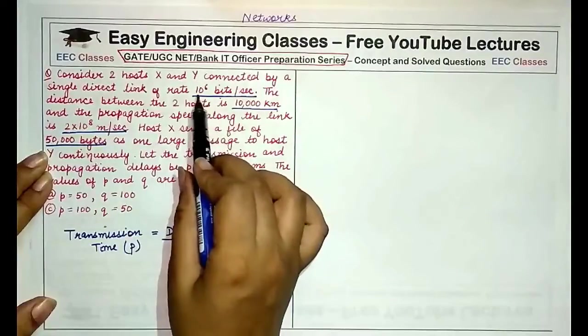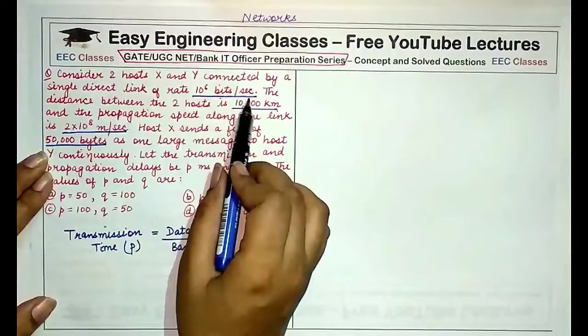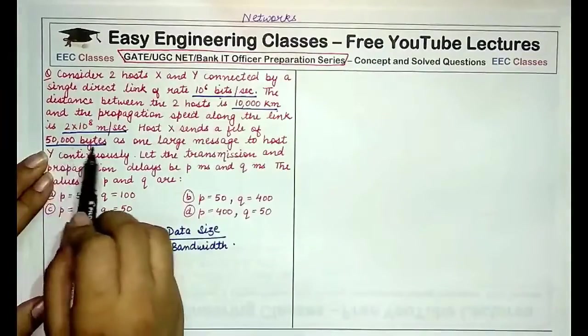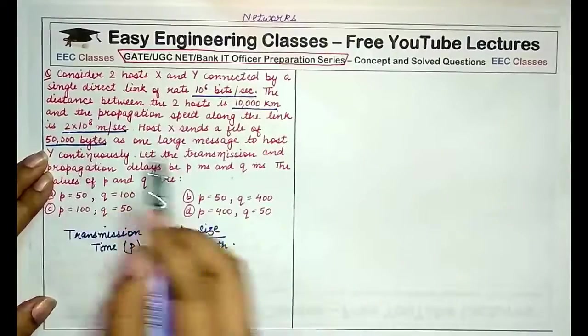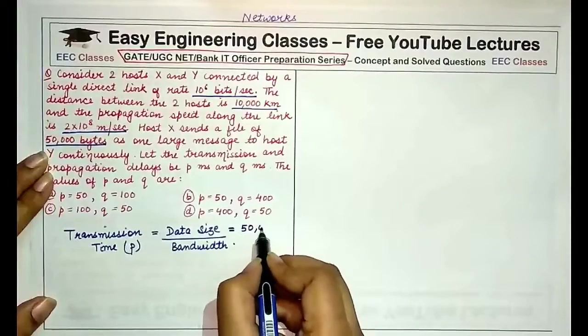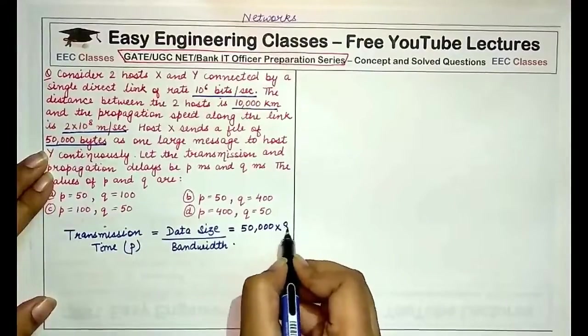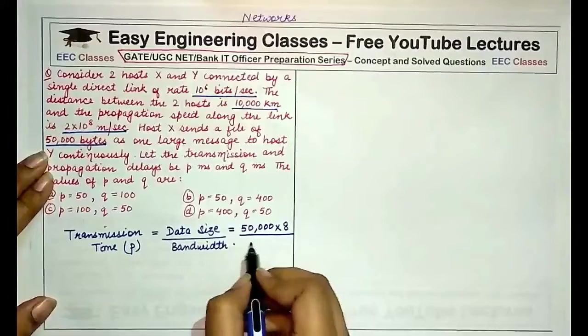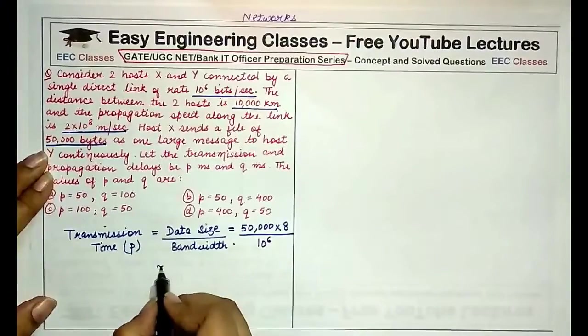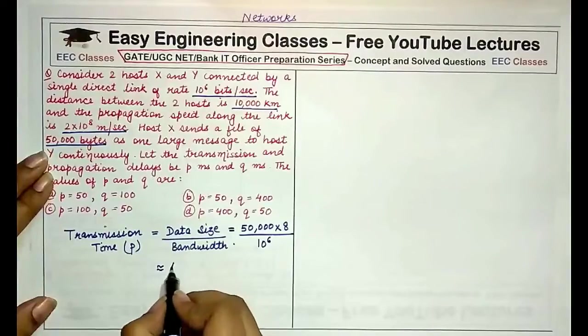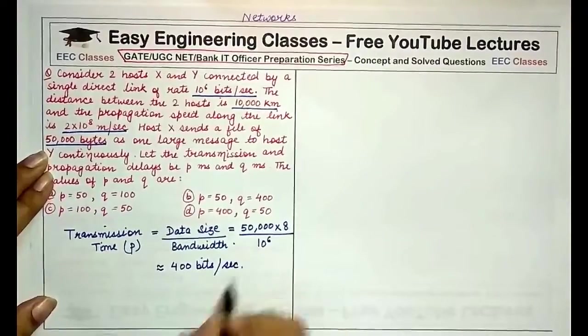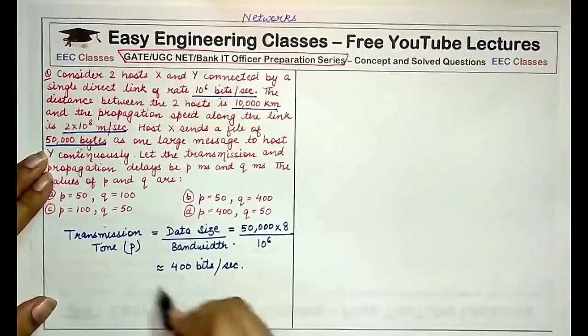Now always remember, since the bandwidth, which is 10^6 bits per second, is given in bits and not bytes, so you have to convert this data also in bits. So to convert bytes into bits, multiply by 8, because one byte is equal to 8 bits. 50,000×8 divided by bandwidth, which is 10^6. Now this value would approximately come out to be 400 bits per second.